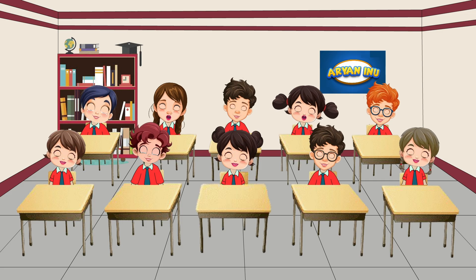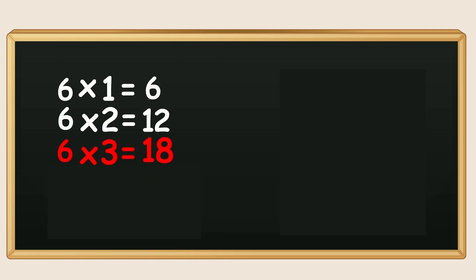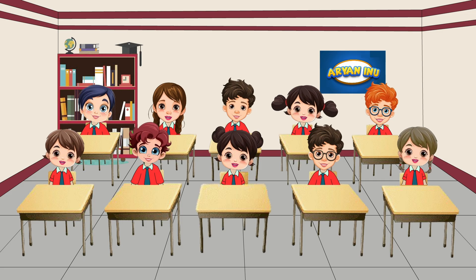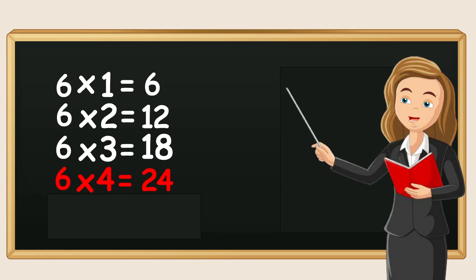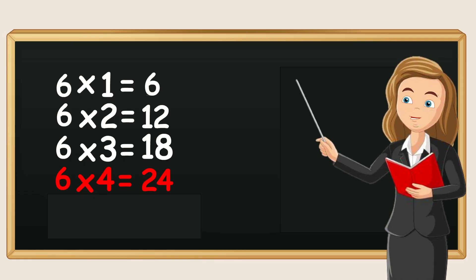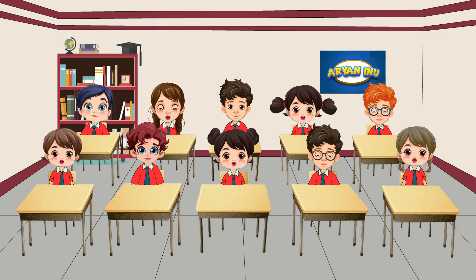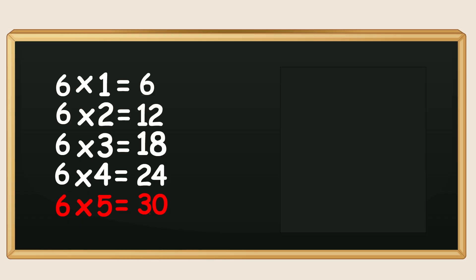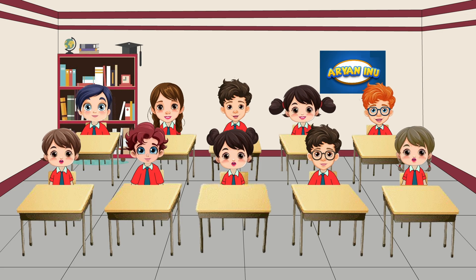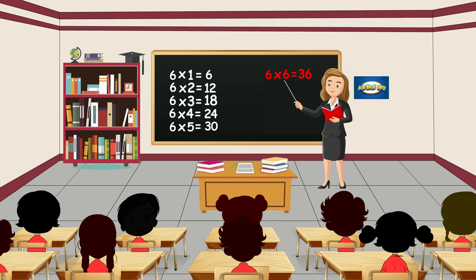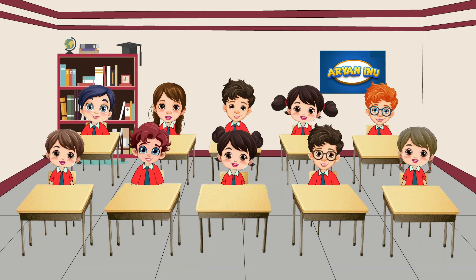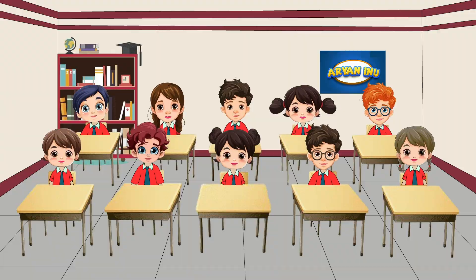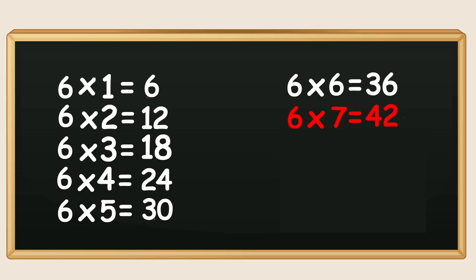Six ones are six. Six twos are twelve. Six threes are eighteen. Six fours are twenty-four. Six fives are thirty. Six sixes are thirty-six.